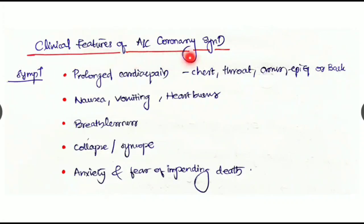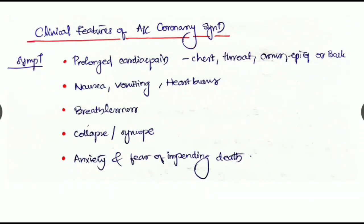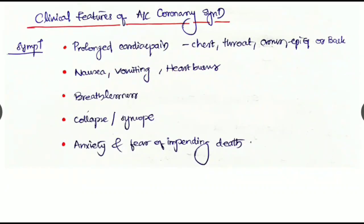The clinical features of acute coronary syndrome: first of all, the symptoms. Prolonged cardiac pain. The pain can be seen in the chest, throat, arms, epigastrium, or even the back, associated with nausea, vomiting, and heartburn.